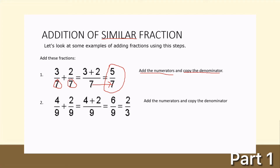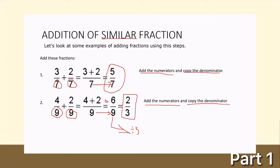Example number 2: 4 over 9 plus 2 over 9. Again, we have the same denominator. Add the numerators: 4 plus 2 equals 6, then copy the denominator, which is 9. So you have 6 over 9. Notice that 6 over 9 can be reduced to lowest terms — it is divisible by 3. So divide by 3: 6 divided by 3 is 2, and 9 divided by 3 is 3. Therefore, your answer in lowest terms is 2 over 3.